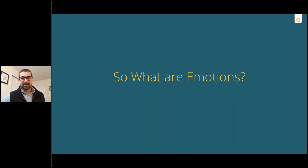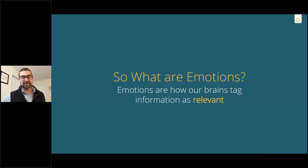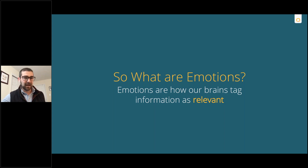So what exactly are emotions? If there's one thing to take away from today, this is the most important: emotions are our brain's way of tagging information as being relevant. We are constantly bombarded by stimuli in our environment. We need to filter out information that's not immediately important and grab onto things important for our survival, reward, and goal-oriented actions. Our emotional responses are our brain's way of making that relevance tag so we know there's something important to pay attention to.